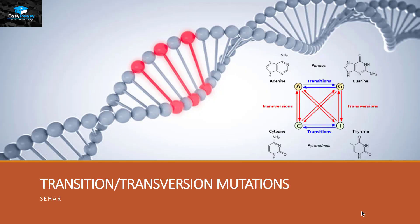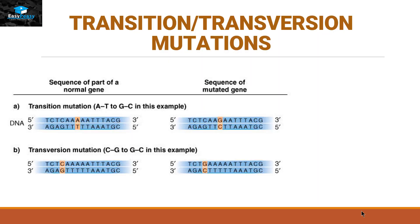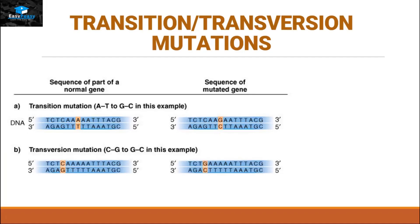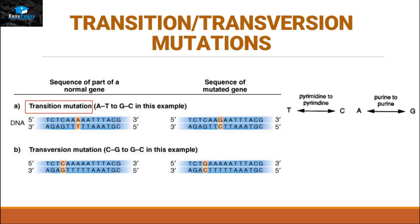Hello friends, this is Sahir from Easy Peasy, and the topic we are going to discuss today is transition versus transversion mutations. Transition mutations mean that if a purine is going to replace a purine, or a pyrimidine is going to replace a pyrimidine, that type of substitution is called a transition mutation.